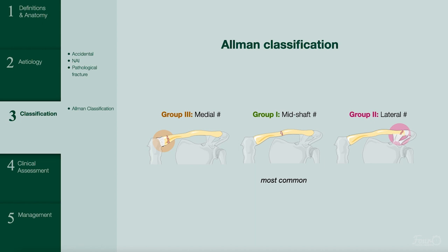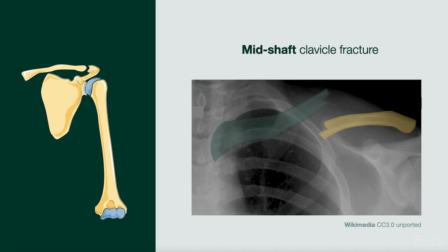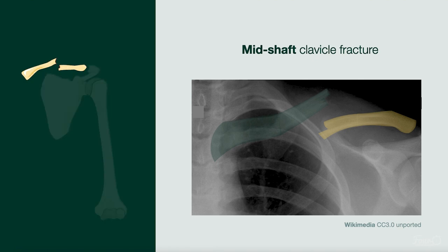Now we'll look through two quick examples. This is a Group 1 midshaft fracture. They are the most common type, involving the middle third of the clavicle, which has the least structural support.